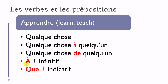Continuing with apprendre: apprendre à plus infinitif — the verb after should be at the infinitive form, meaning 'to learn.' Then apprendre que plus indicatif — be careful, even though we use que, it should be followed by the indicatif, not the subjonctif. So: apprendre quelque chose, apprendre quelque chose à quelqu'un, apprendre quelque chose de quelqu'un, apprendre à plus infinitif, apprendre que plus indicatif.